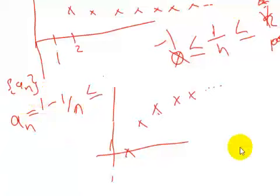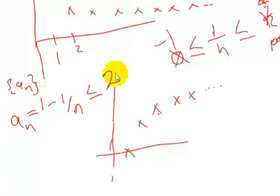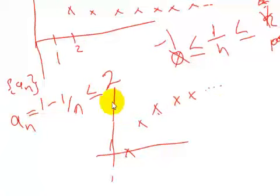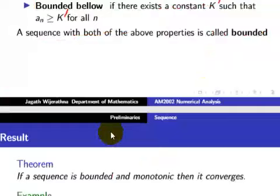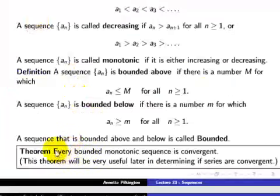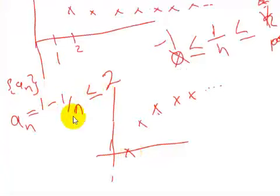The sequence 1 minus 1 over n is bounded above by 1, or any larger number — you can choose 2 or 100 or 1000, since all are upper bounds. So all terms are less than or equal to 1. Since this sequence is bounded above and increasing, according to the theorem of bounded monotonic sequences, this sequence is convergent.